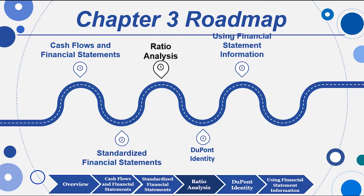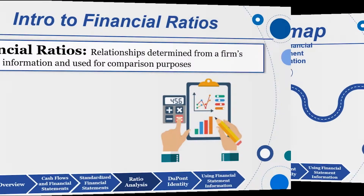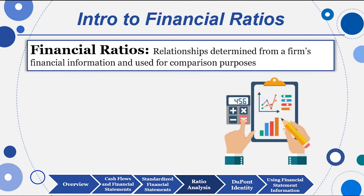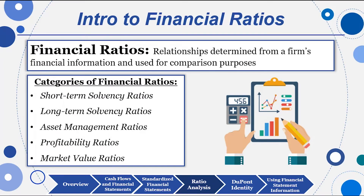We'll see if we can do some memory tricks on some of these, and I'll point out which ratios are key and important — ones you should memorize for life. These ratios are determined from the financial statements, most of the time from the income statement and the balance sheet, and are categorized in five key categories: short-term solvency, long-term solvency, asset management, profitability, and market value ratios.